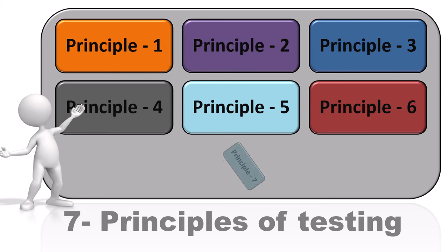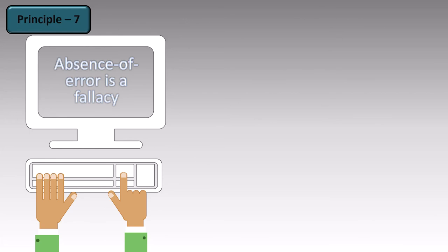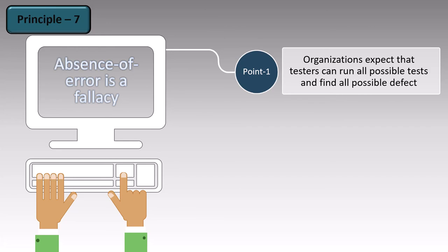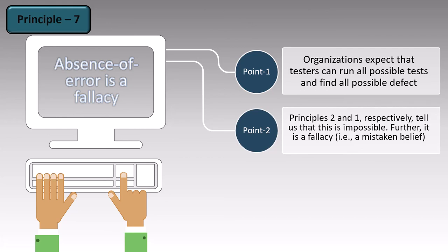Now we will cover the seventh principle. This principle states that the absence of error is a fallacy. In an organization, it is expected that testers can run all possible tests and find all possible defects. This expectation is completely wrong — we can't run all possible tests and we cannot find all possible defects. If you recall, principle 2 says that exhaustive testing is impossible, and principle 1 says that we can never find all the bugs. We can claim to have found a bug, but we can't claim that there are no defects left in the software.